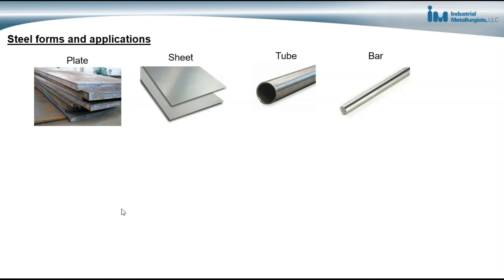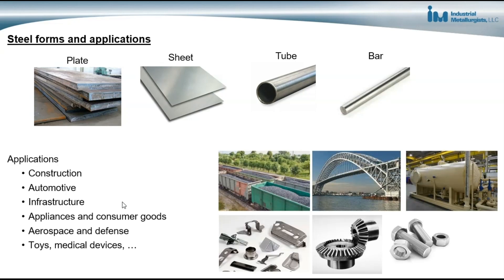There are several different forms of steel available for making different components and structures: plate, sheet, tube, bar, rod, wire, and pipe. And there are a wide variety of applications for which steel is used — construction, automotive, infrastructure, appliances and consumer goods, aerospace and defense, toys, medical devices, and many others. Steel is a very versatile material, with a lot of different levers available for modifying steels in order to get different properties for meeting different applications.